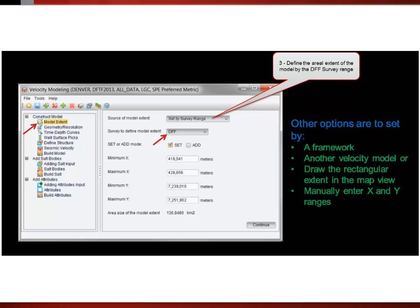Define the model extent by choosing the source to be a survey range and selecting the survey. You can also set your model extent by a framework, another velocity model, drawing in the extent in the map view, or manually entering in the parameters in the x and y ranges.